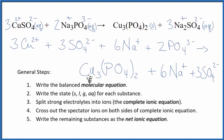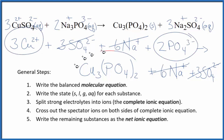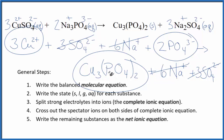We cross out the spectator ions because they are the same on both sides and haven't changed. We have six sodium ions in the reactants and six sodium ions in the products — cross those out. We have three sulfate ions and three sulfate ions — cross those out too. What remains is the net ionic equation for CuSO₄ plus Na₃PO₄.